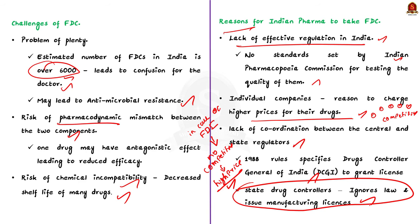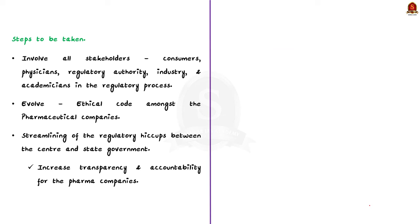For the conclusion, mention steps to effectively regulate FDCs: involving all stakeholders — consumers, physicians, regulatory authorities, industry, and academicians — in the regulatory process; evolving an ethical code among pharmaceutical companies; and streamlining the regulatory coordination between central and state governments. Through this discussion we understood what fixed dose combinations are, their advantages, the challenges associated with them, and why despite those challenges Indian pharma companies resort to FDCs.